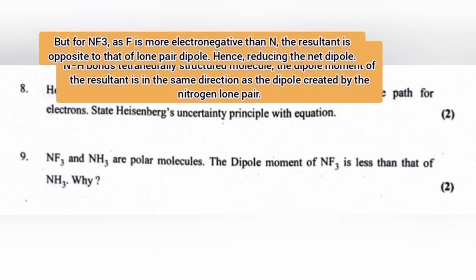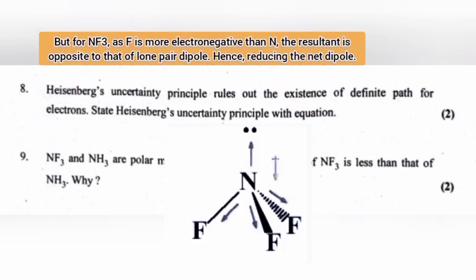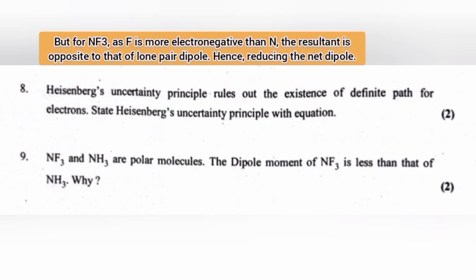But for NF3, as F is more electronegative than N, the resultant is opposite to that of the lone pair dipole, hence reducing the net dipole.